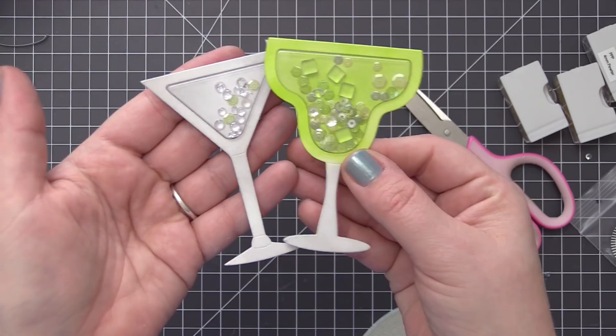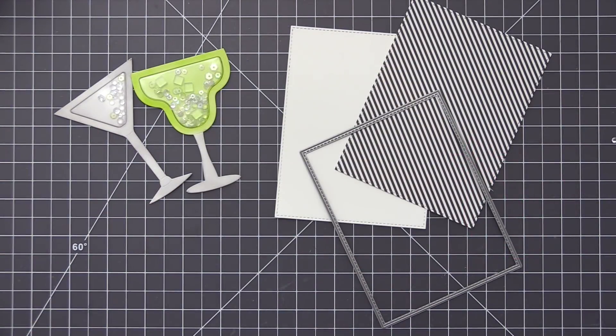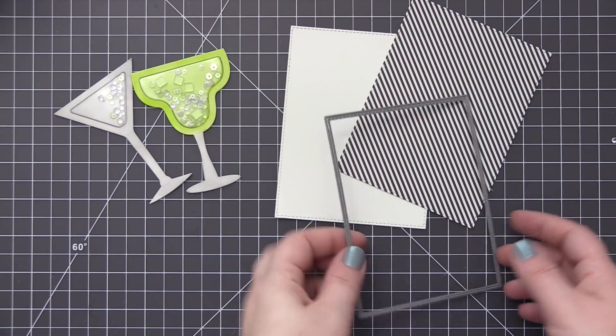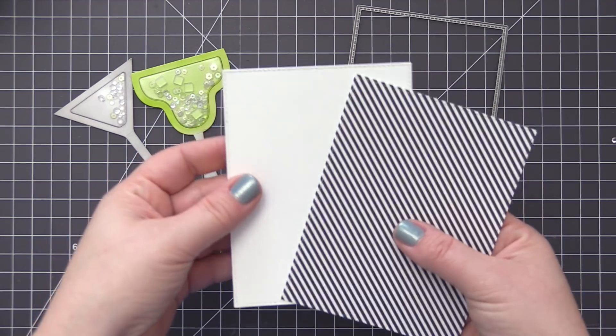So now you can see I have them both finished. I love how they turned out. I love all of that stuff kind of inside of those glasses and I especially love those really cute ice cubes. So now that we finished creating our glasses, we can go ahead now and create the rest of the card.